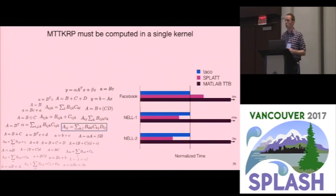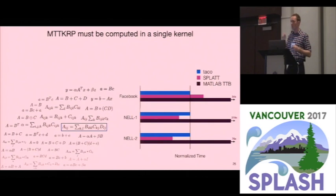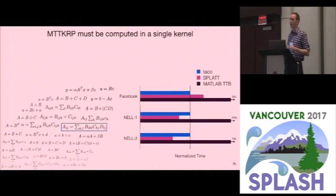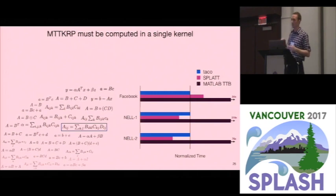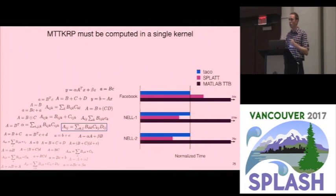MTT-KRP is an expression from data analytics where you multiply a three-tensor by two matrices in different dimensions. You have to implement this in one kernel for performance, and that's what TACO emits — the same as Splat, which is hand-optimized code. The MATLAB tensor toolbox does not do it in a single kernel, so their performance suffers.